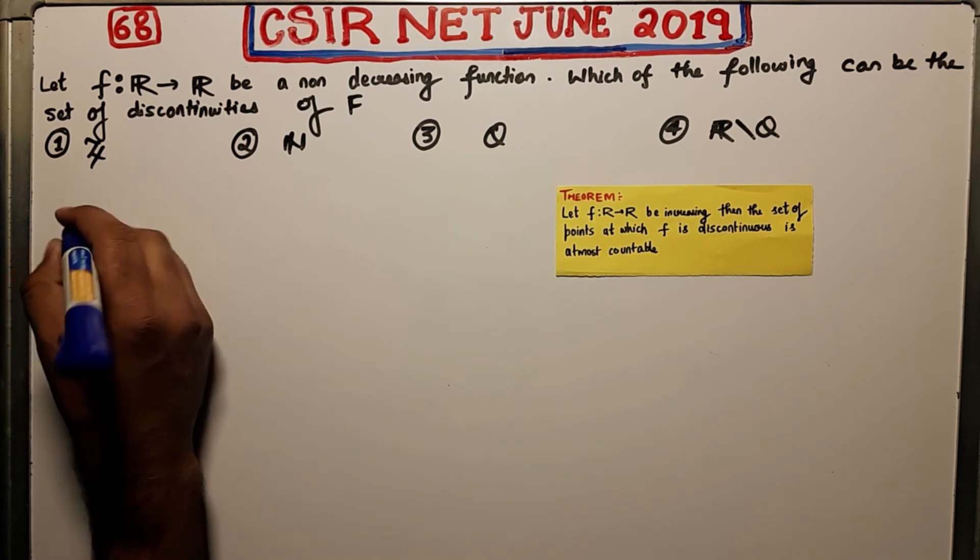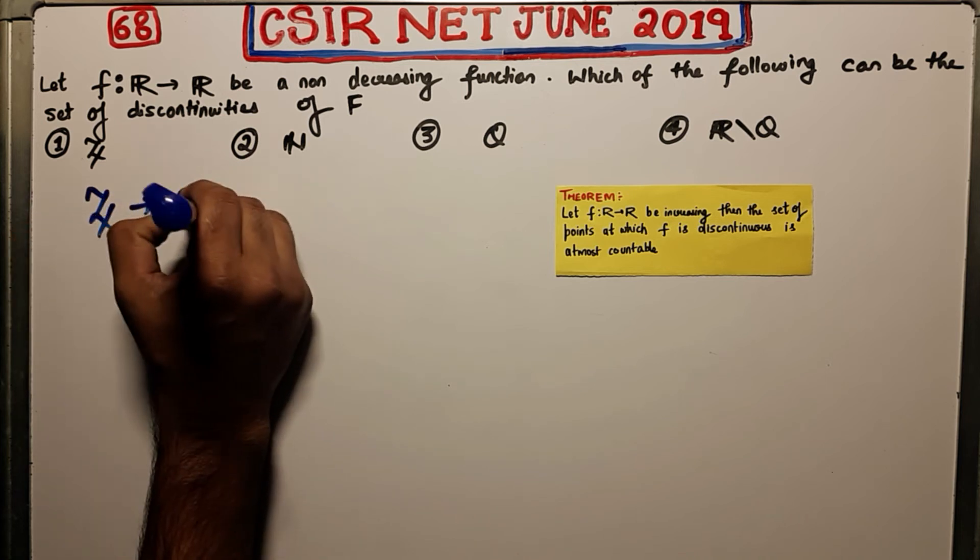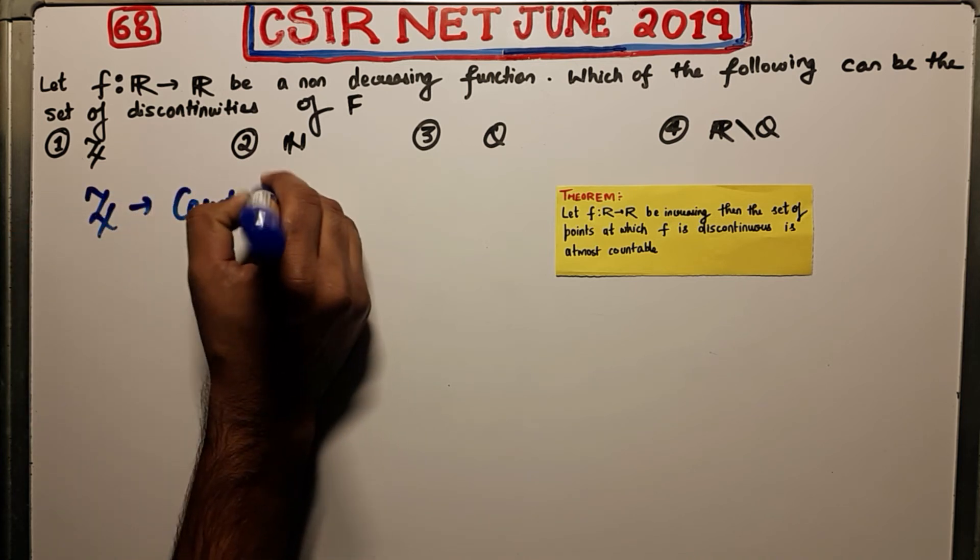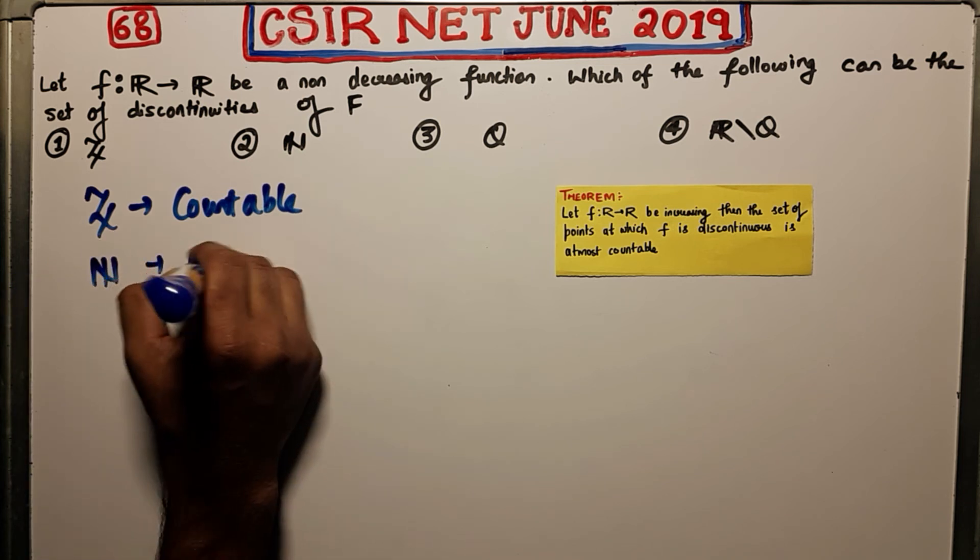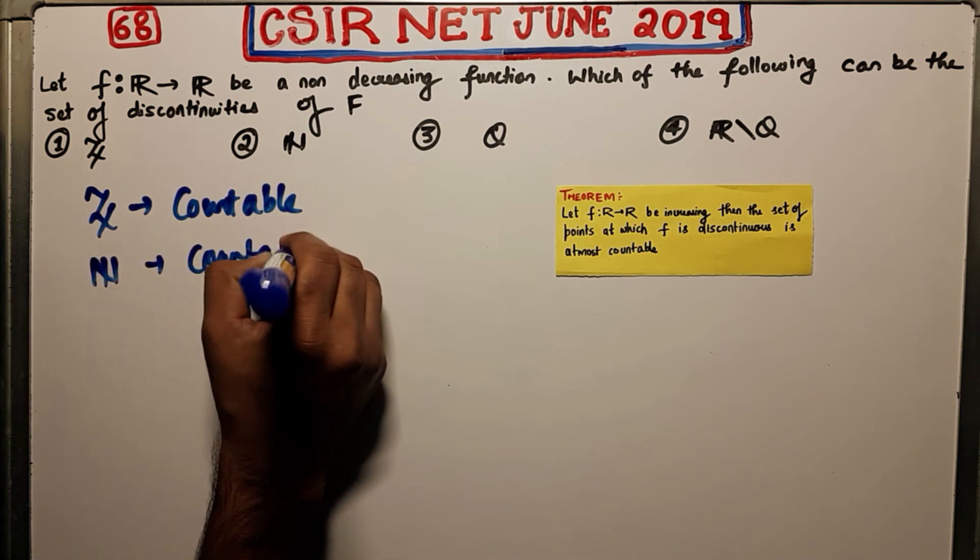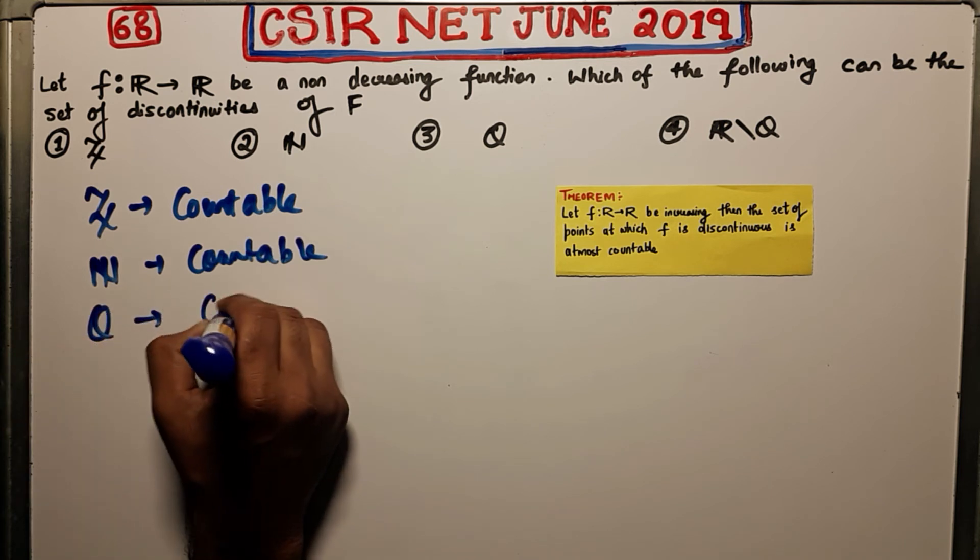So what do you know? You know that Z is actually countable. This you already know. Z is countable, N is also countable, N is also countable, Q is countable.